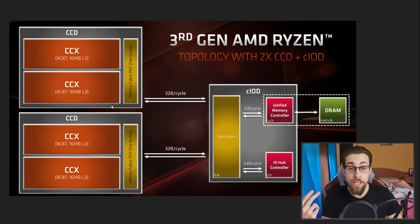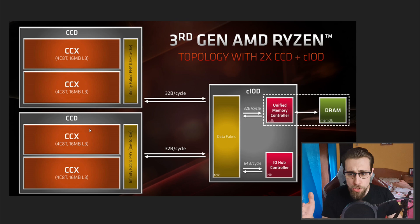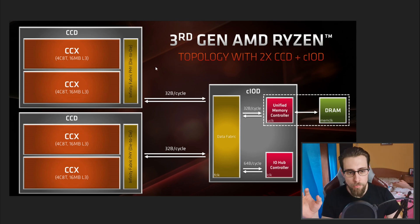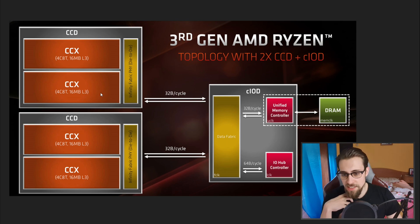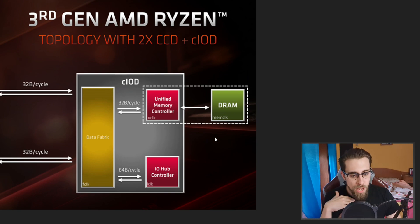You can also have more CCDs — for example, 2 CCDs. That's why we have CPUs with 16 cores and 32 threads. This is possible on the AM4 socket. Then we also have the cIOD, which includes the memory controller to the DRAM.